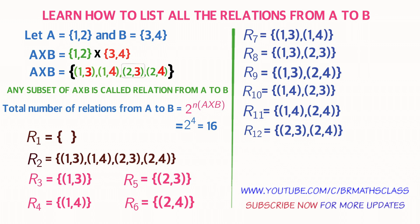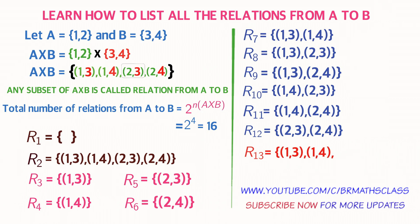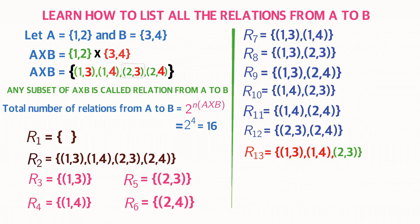Now I will write all subsets of A cross B which contain three elements. R13, the thirteenth relation: take the first two elements — ordered pair (1,3) and ordered pair (1,4). The immediate next element is ordered pair (2,3). So R13 equals the set containing ordered pair (1,3), ordered pair (1,4), and ordered pair (2,3).